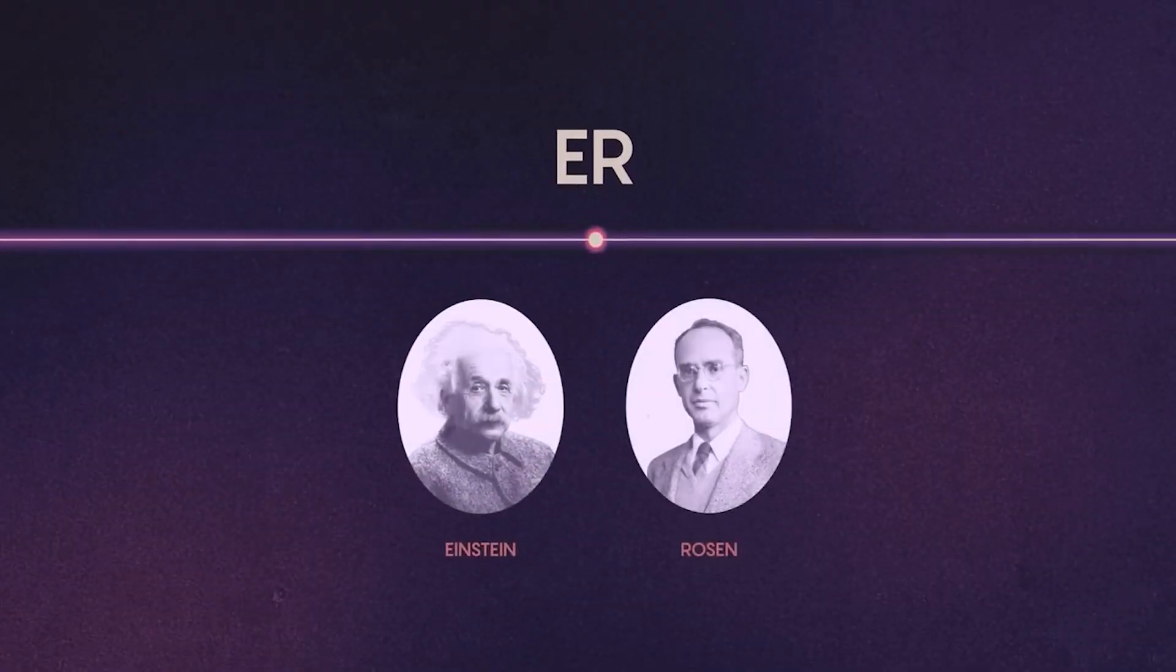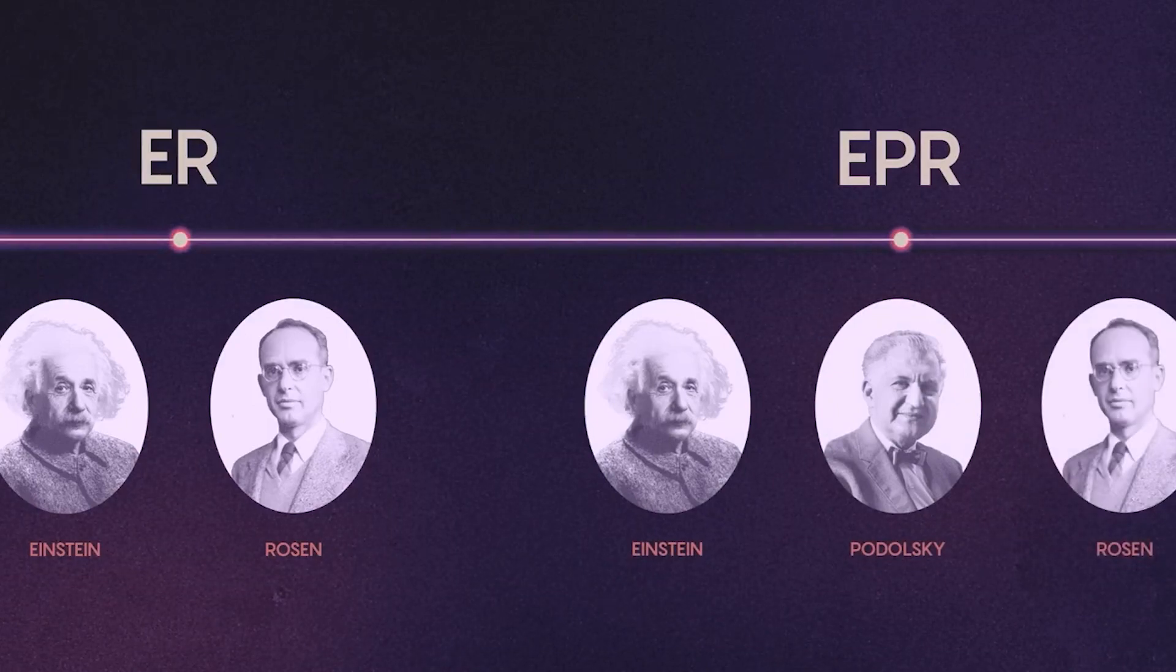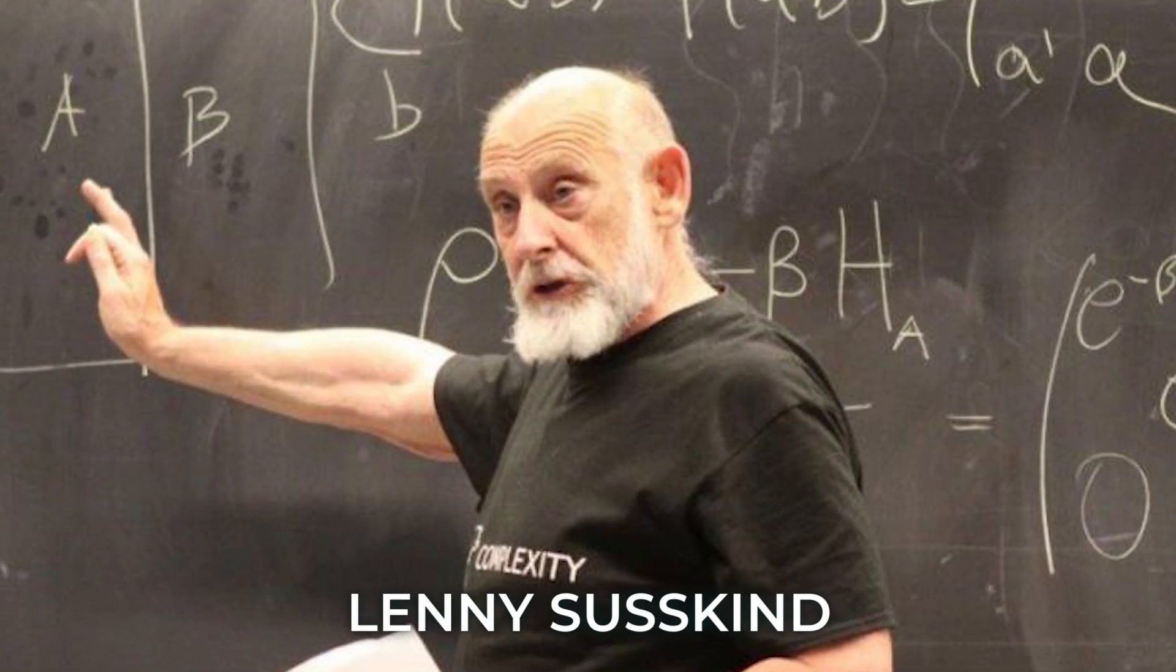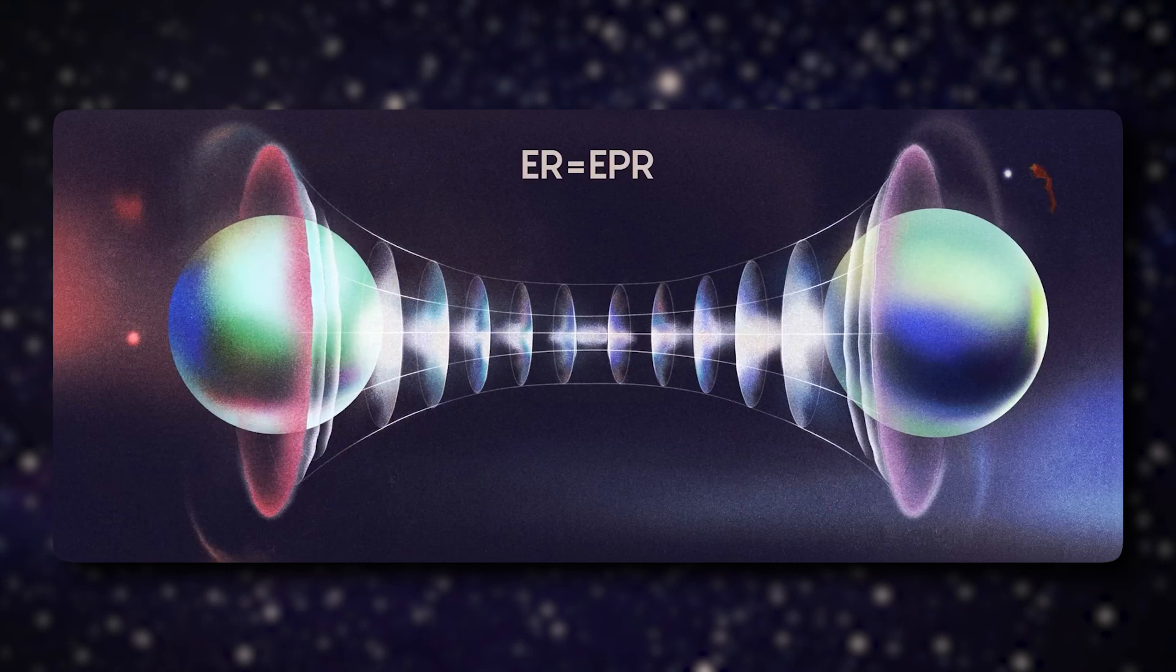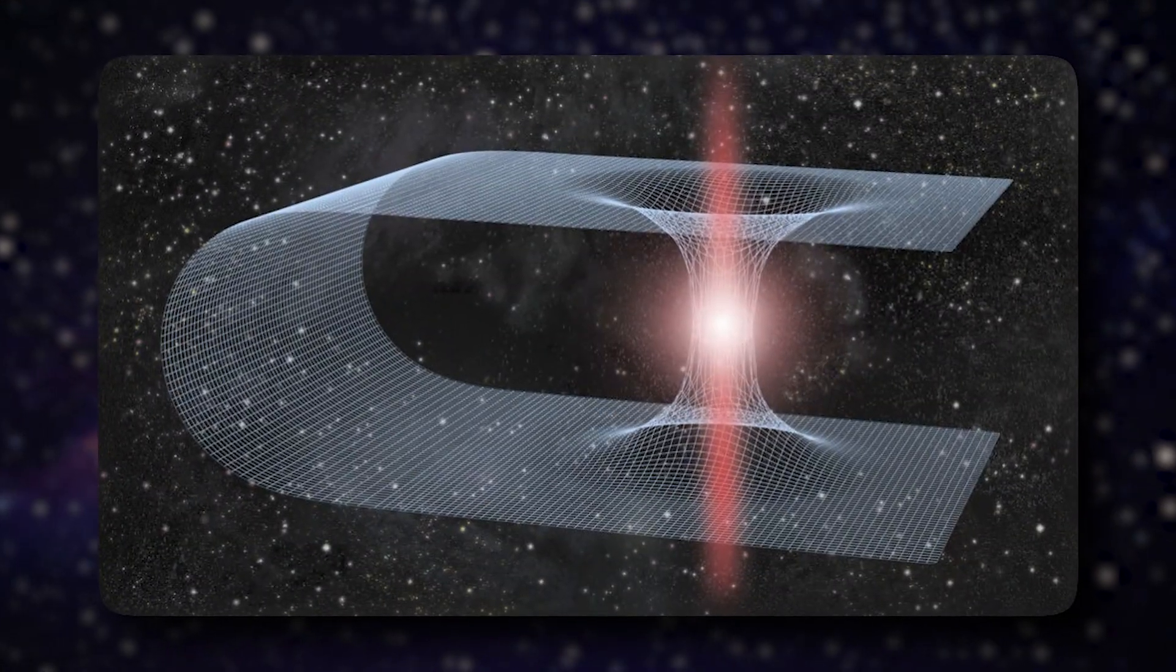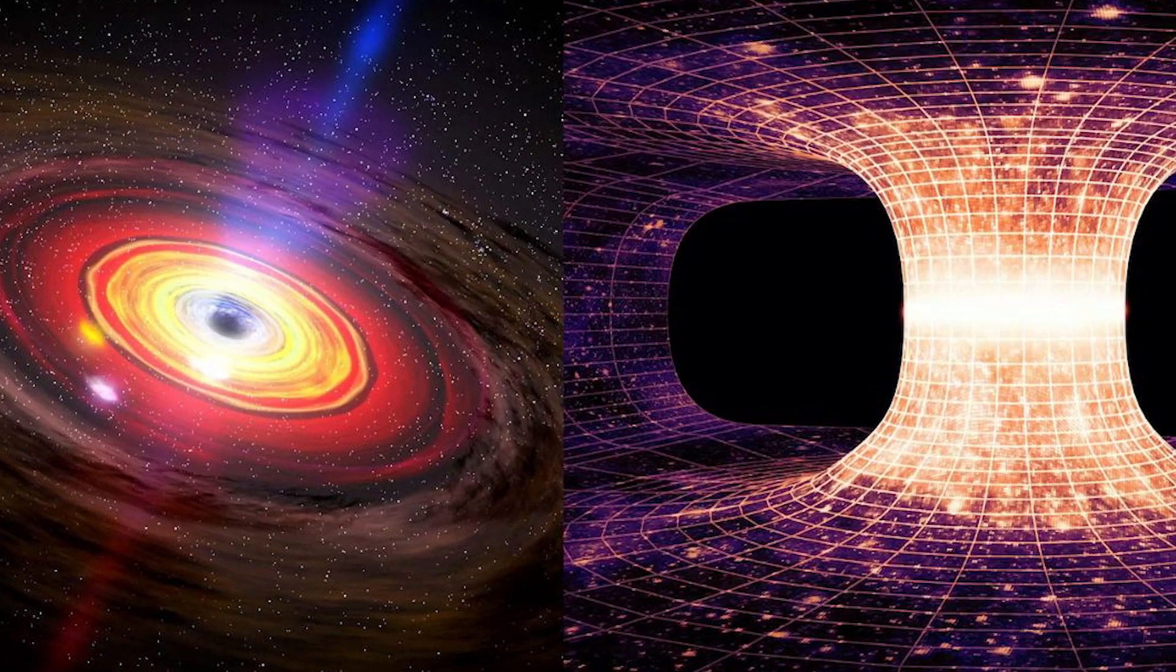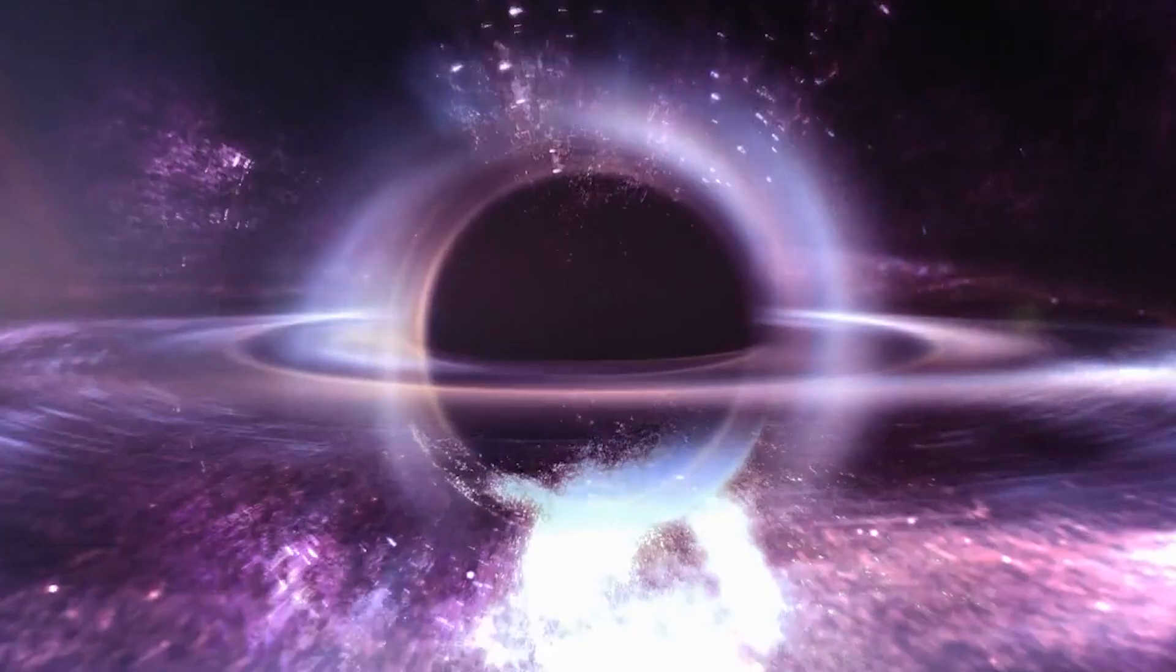For years, the two papers existed in parallel universes of scientific discourse, until an audacious claim in 2013 by Juan Maldacena and Lenny Susskind stitched them together with a simple equation: ER equals EPR. This bold hypothesis declared wormholes and entanglement as two faces of the same mysterious coin.